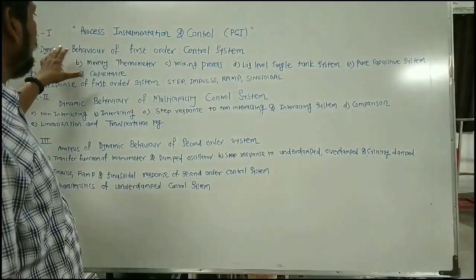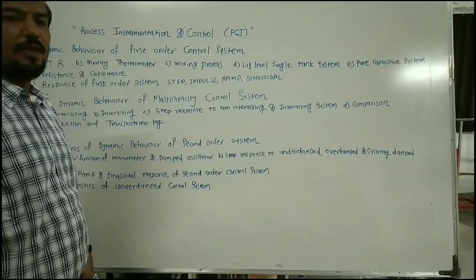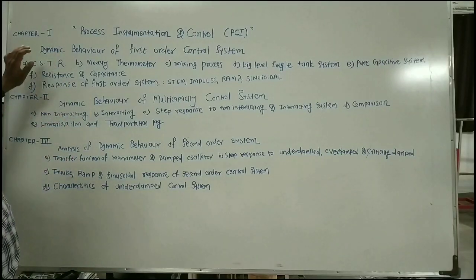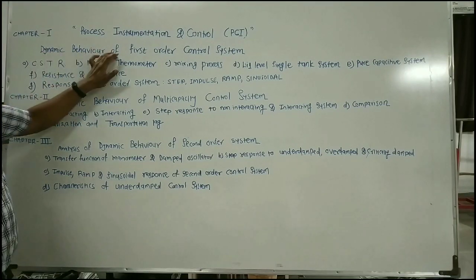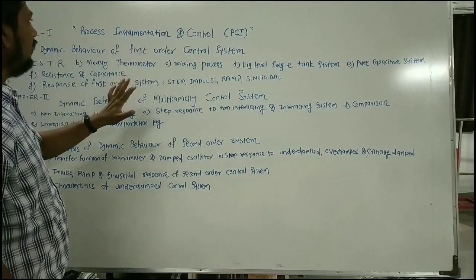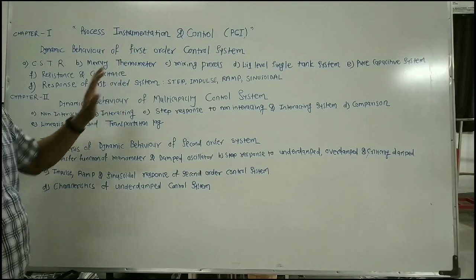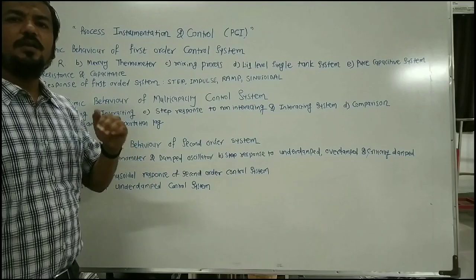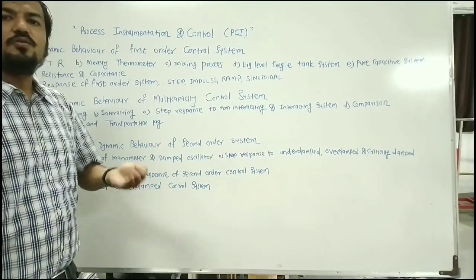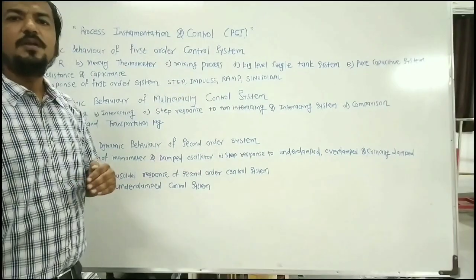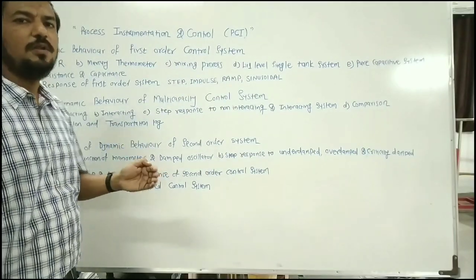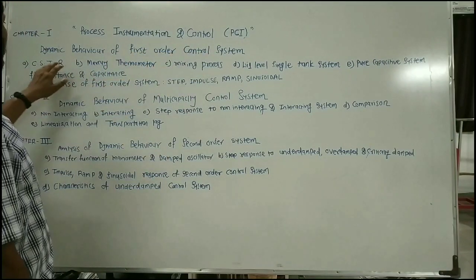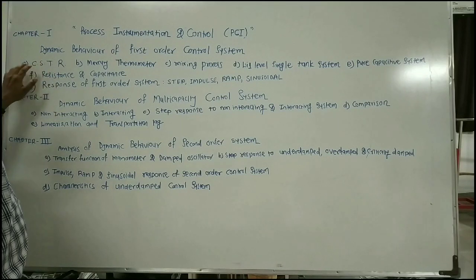Let us overlook the syllabus of Process Instrumentation and Control. I have included the first three chapters of the syllabus, as you can see on the whiteboard. Chapter number one deals with the dynamic behavior of first order control systems. In this unit, you have to determine the transfer function of the first order system, then provide some input to study how the first order system reacts with respect to time — that is, the response of the first order system.